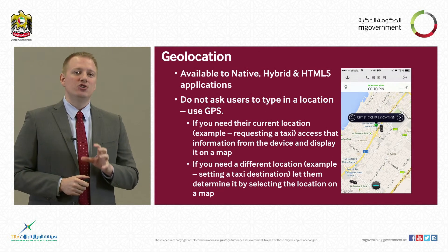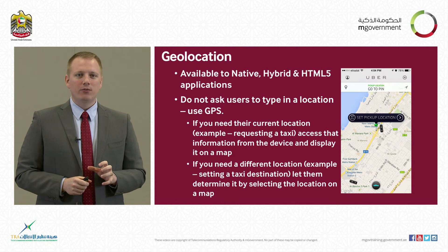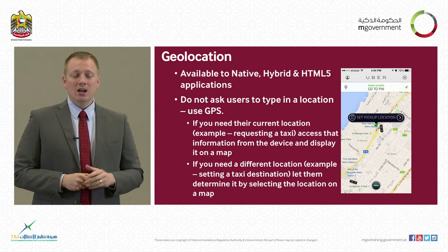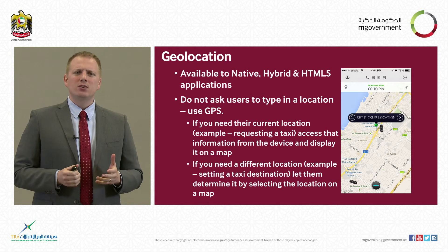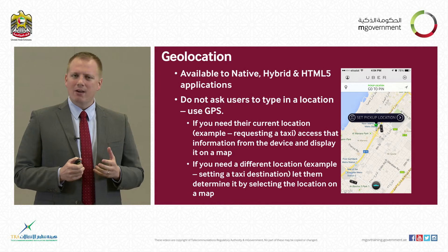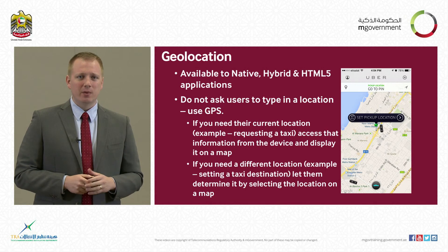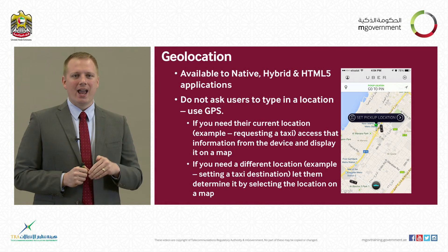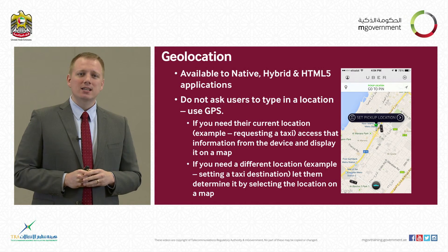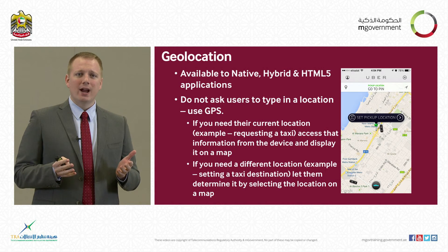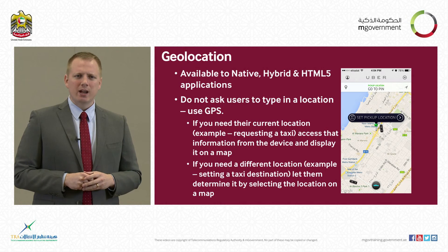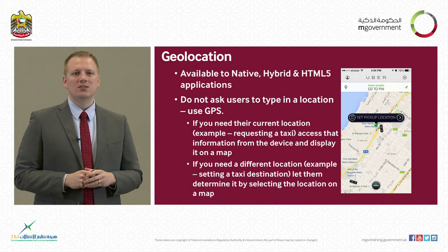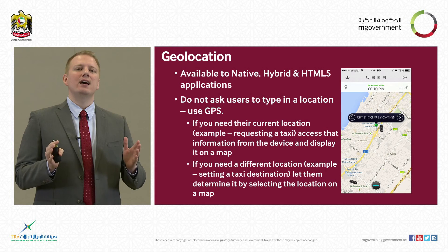Remember that GPS sensors exist in mobile devices. If you are providing any service that could use a user's location, integrate it. If a user is calling for a taxi, why have them describe their location when the application could grab their GPS coordinates and send a taxi directly to where they are? Similarly, if a user needs to visit your entity in person, the easiest thing to do is grab their GPS coordinates, plug them into a map API, find the closest branch, and provide directions back to them.